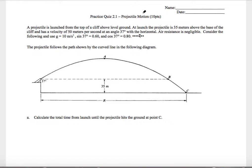All right, this is the solution video for the practice quiz given in class 2.1 on projectile motion. We have a projectile launched from a cliff above level ground. The projectile is 35 meters above the base of the cliff at the start and has a velocity of 50 meters per second at an angle of 37 degrees.